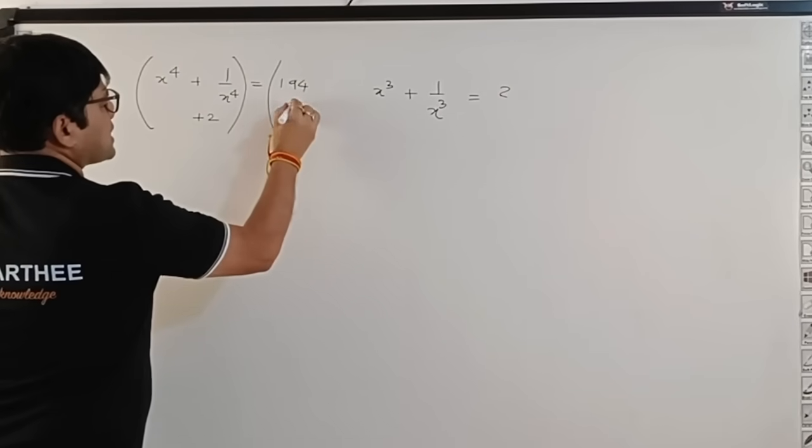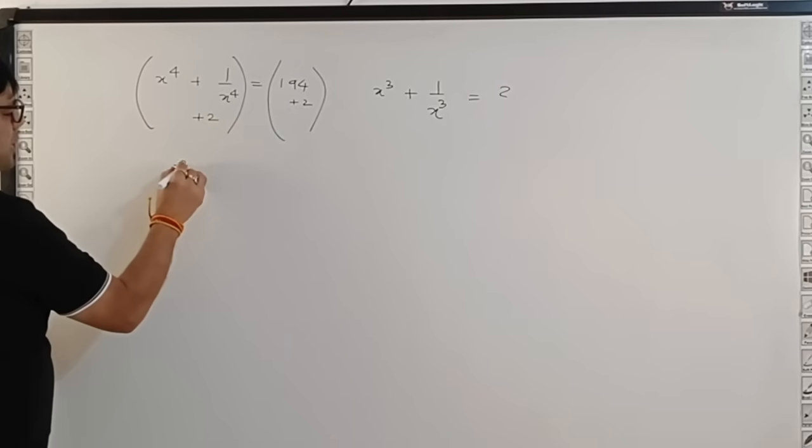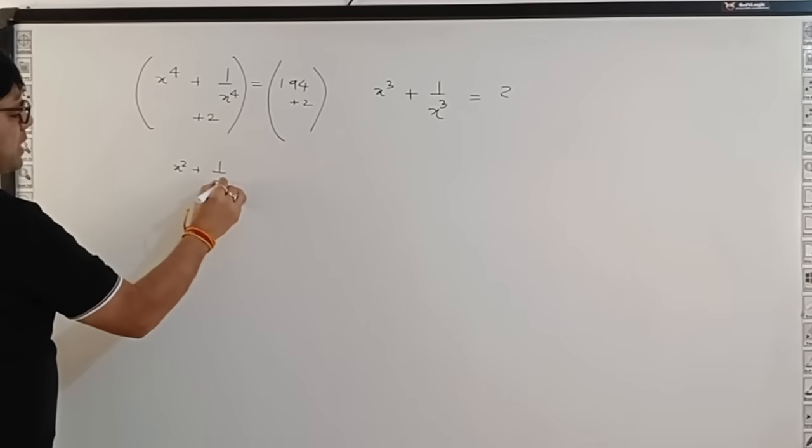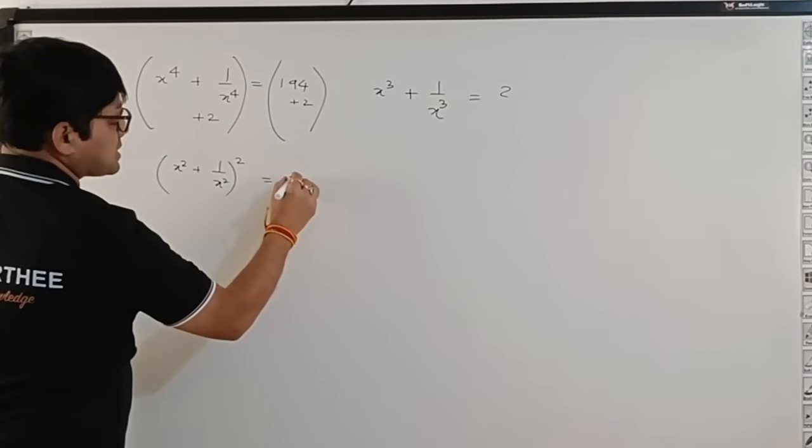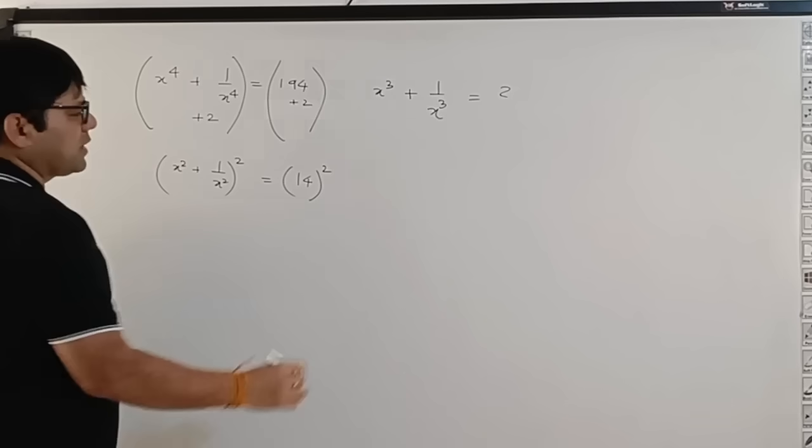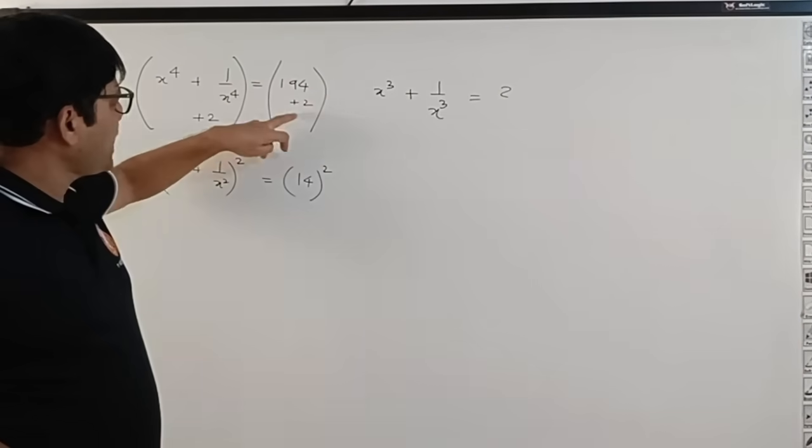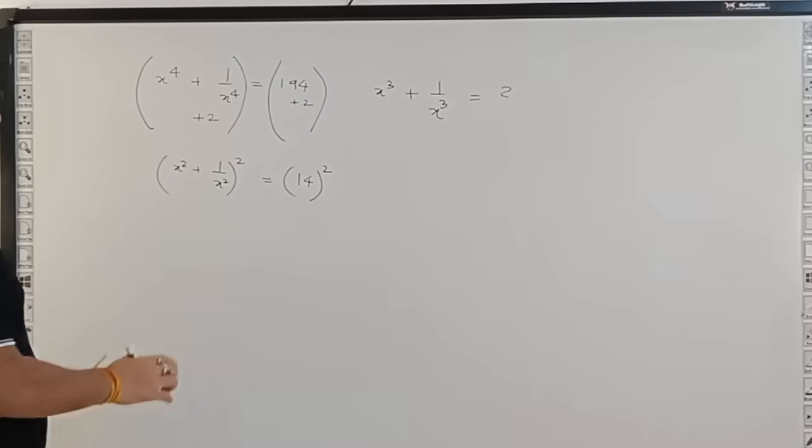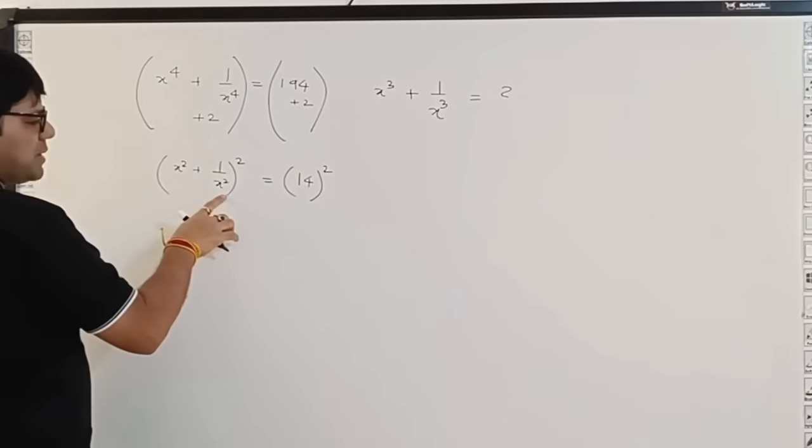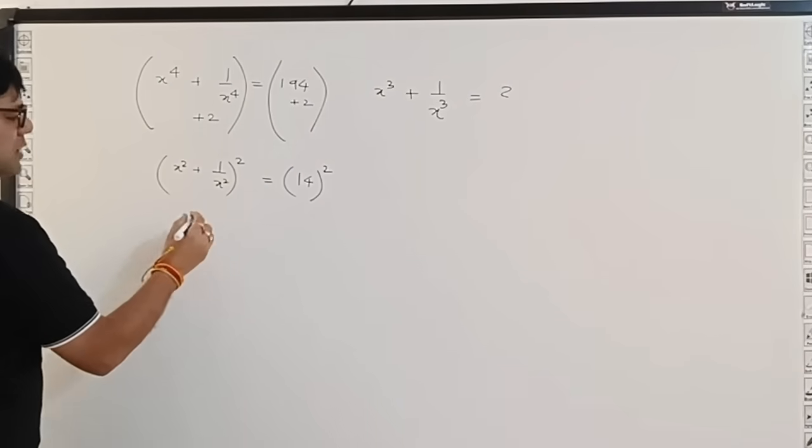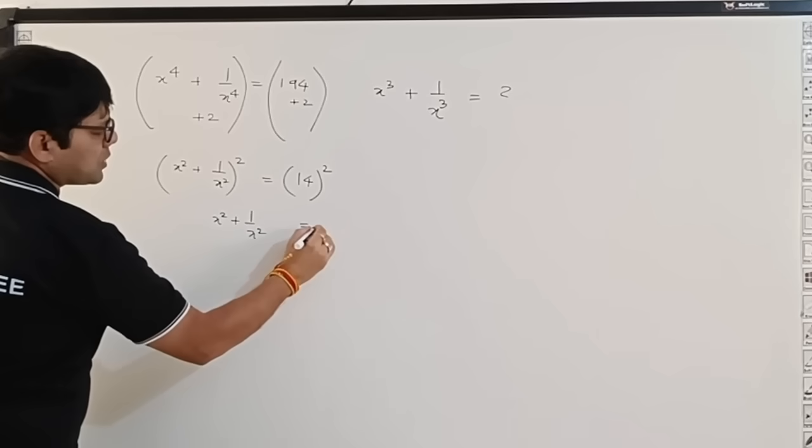If I add 2 to both sides, what I get here is (x^2 + 1/x^2)^2. This part becomes 196, that is 14^2. If you are not aware, 14^2 is 196, and we have 194 + 2 on the right-hand side. Now since it is a square, the answer has to be a positive value. So we get x^2 + 1/x^2 = 14.